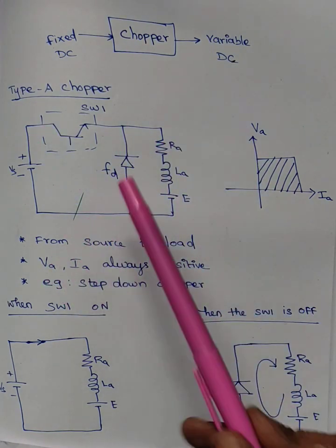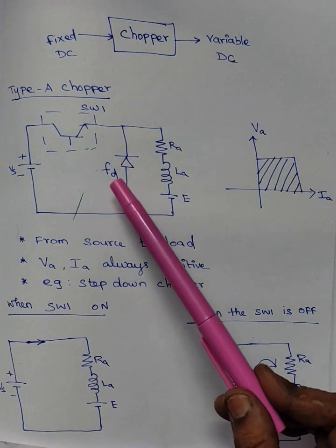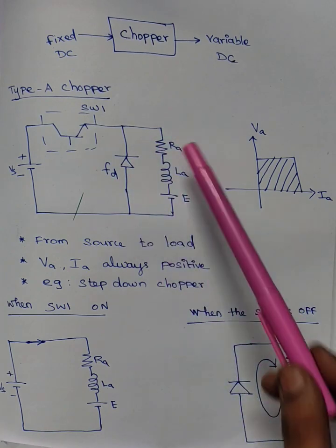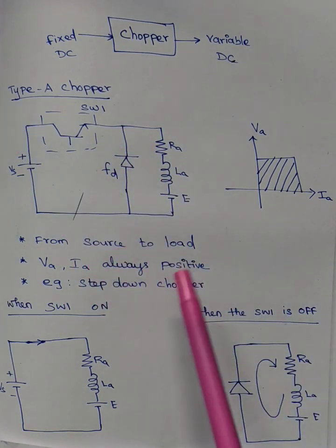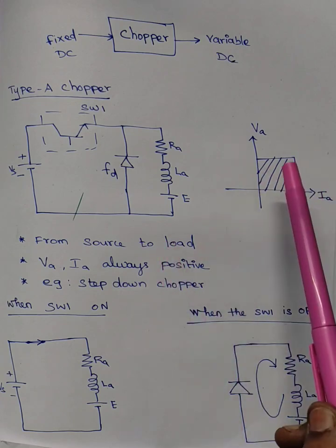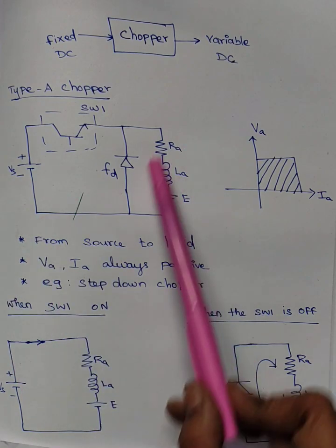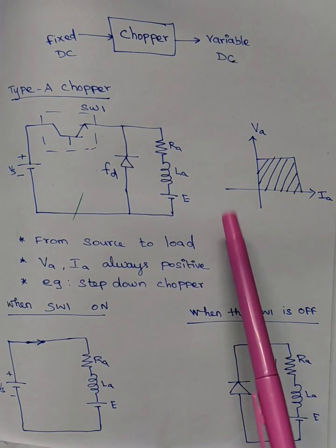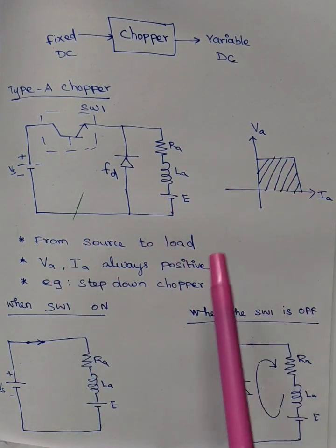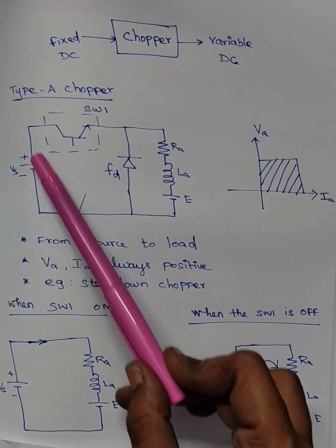Type A chopper has a switch, a freewheeling diode, and a motor. Type A chopper is a motoring operation — that is, first quadrant operation — where both voltage and current are positive. The power flow from supply to motor is known as motoring.